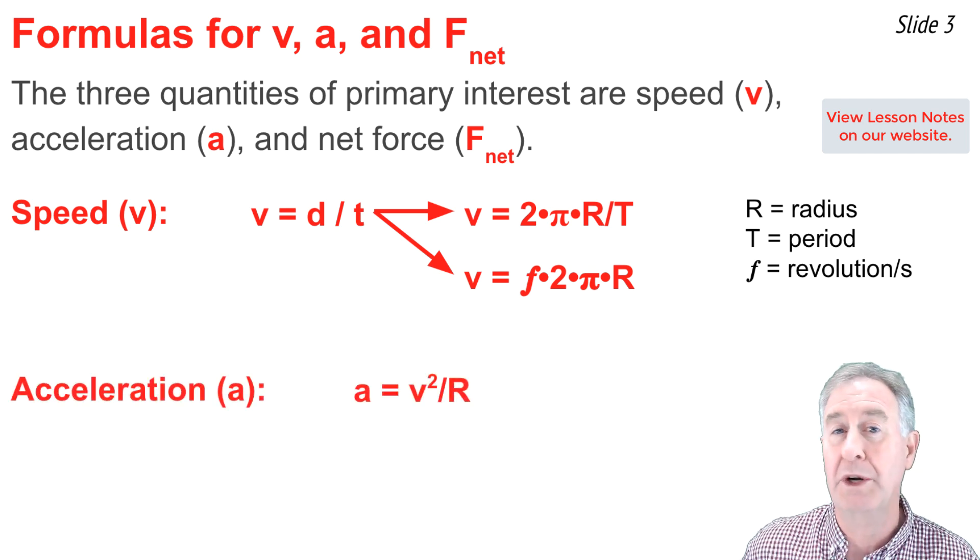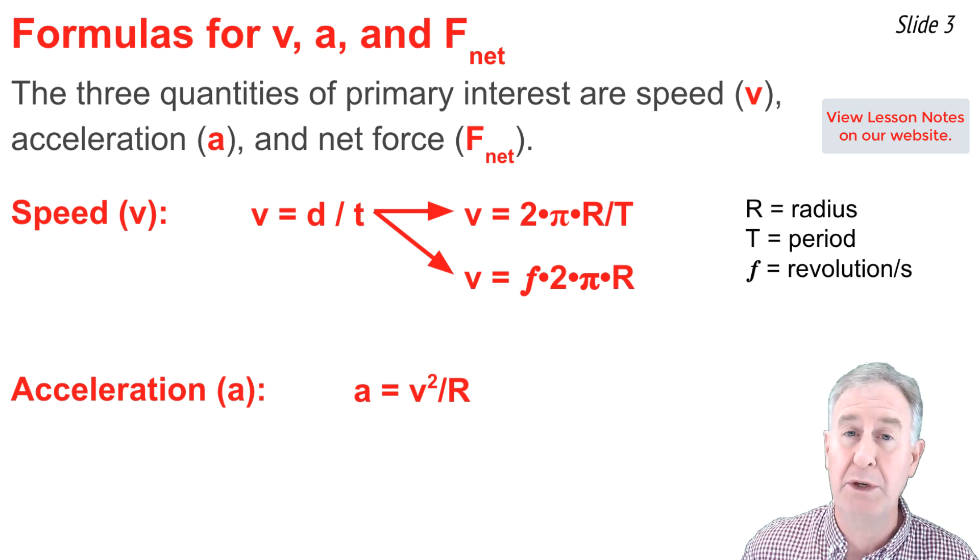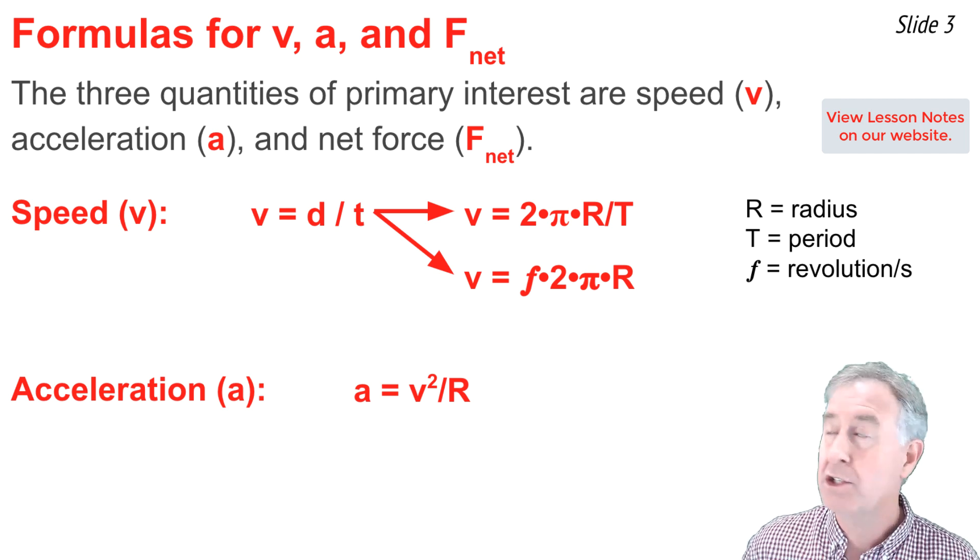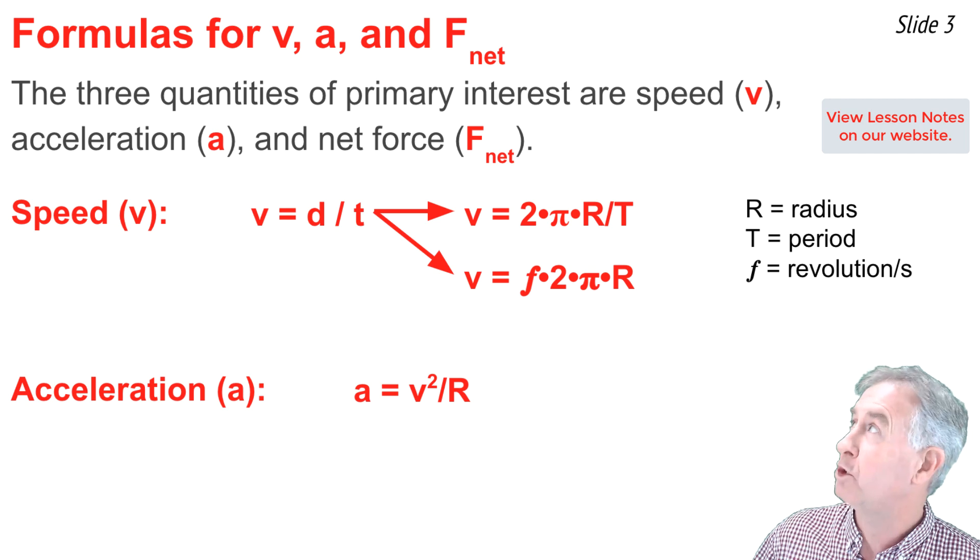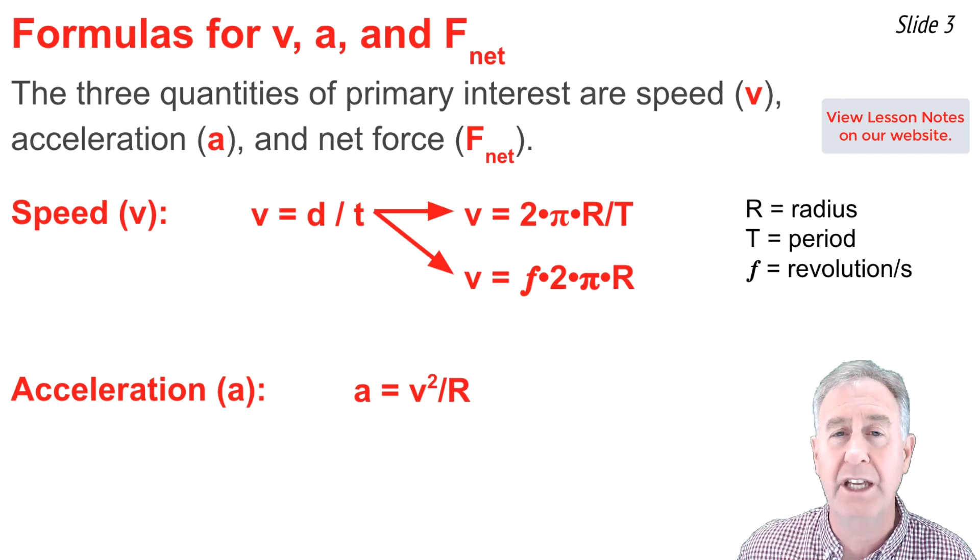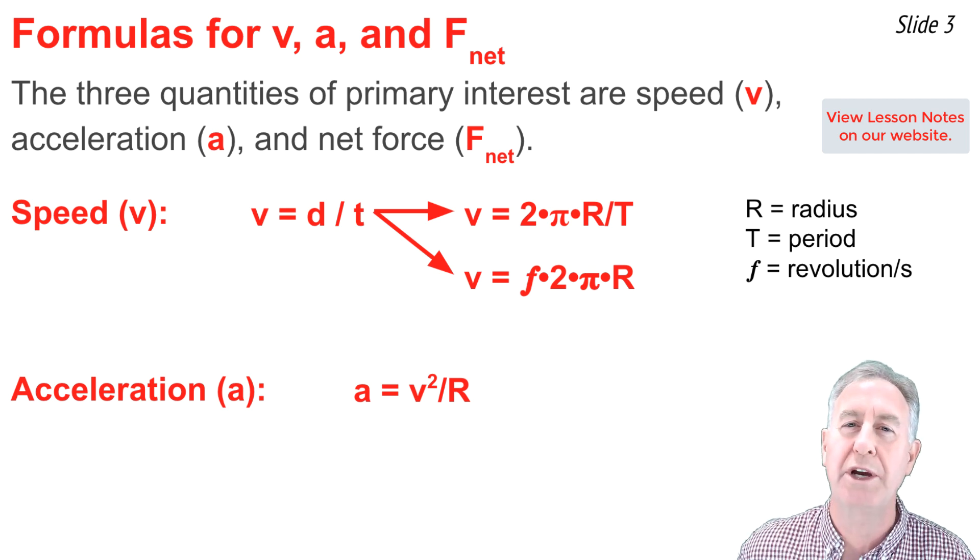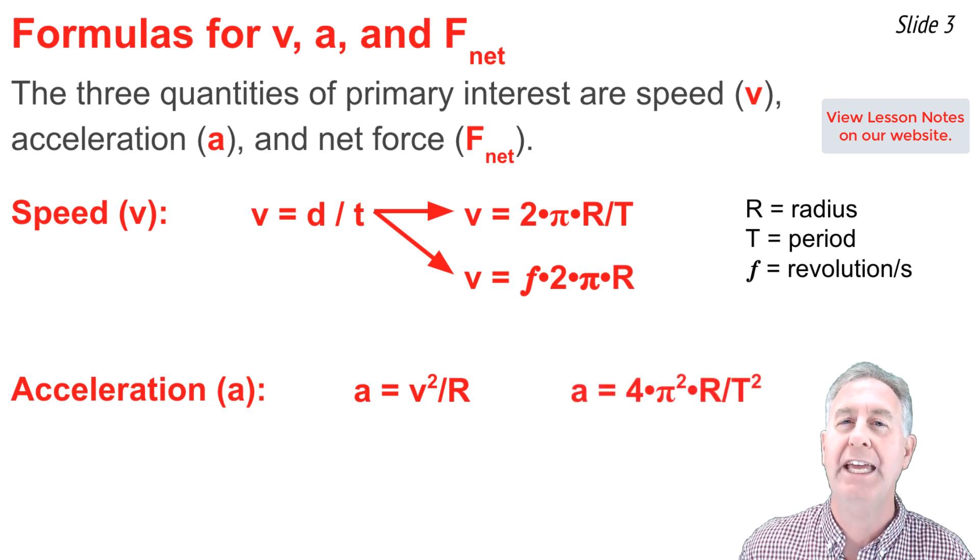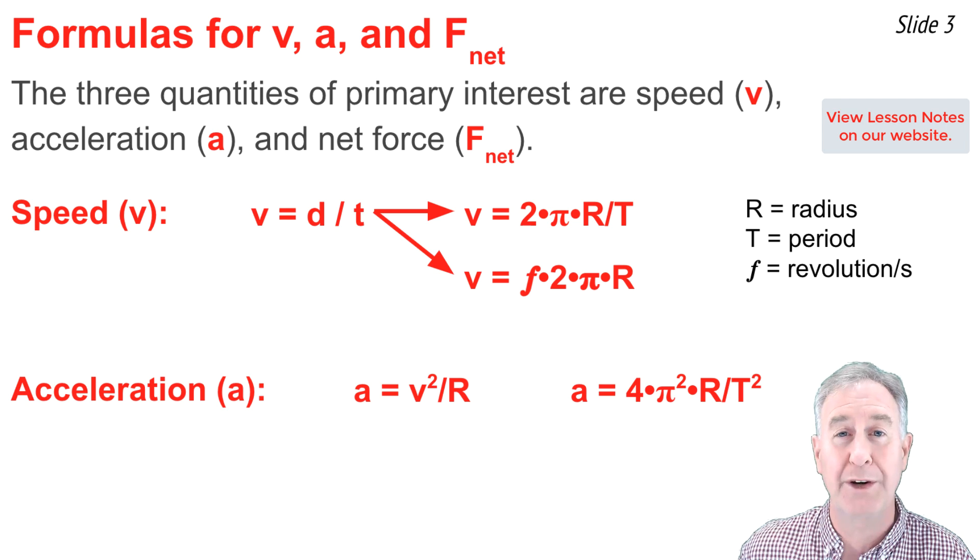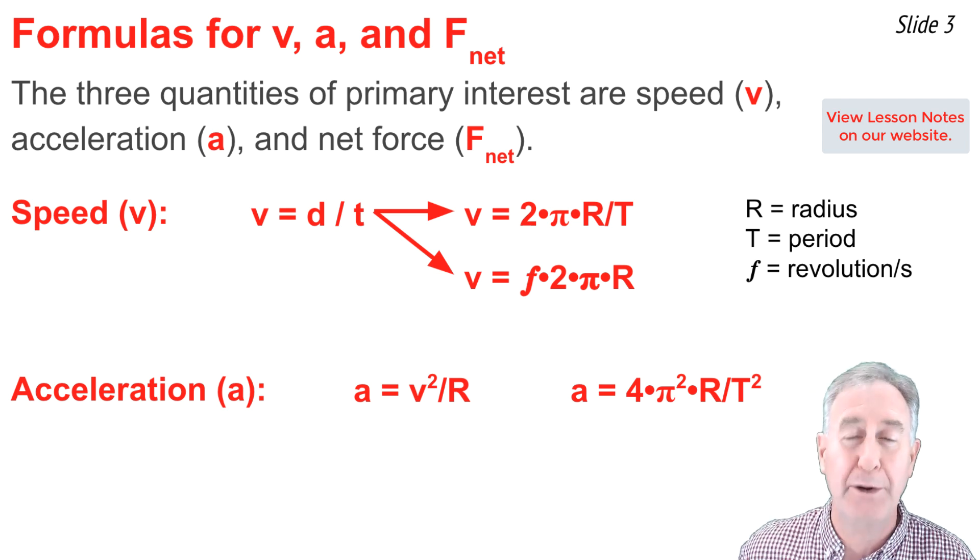When it comes to calculating the acceleration for moving in circles, the equation is a equal v squared over r. But oftentimes we don't know the speed, and instead we know the radius and the period. So I can take the expression for speed, 2πr divided by big T, and substitute it in for v squared in the equation, and come up with a new equation for circular motion, a equal 4 times π squared times r divided by period squared.